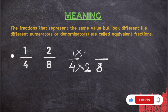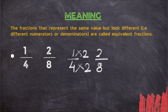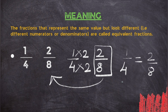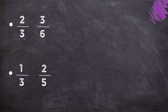Do the same thing in the numerator: 1 times 2 is 2. So the fraction you get is 2 upon 8. Is it the same fraction shown? Yes! That means 1 upon 4 is equal to 2 upon 8 — so 1 upon 4 and 2 upon 8 are equivalent fractions.